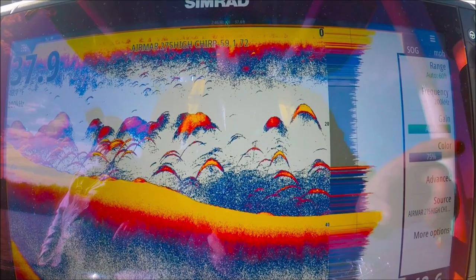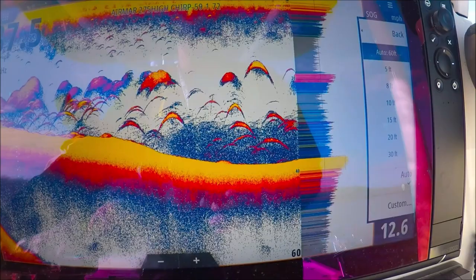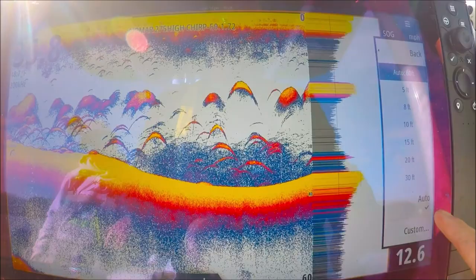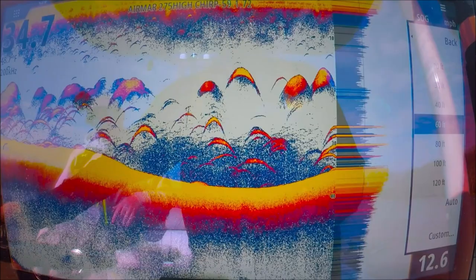Range, auto as well. If you're fishing in say 37 feet of water like we are right now and you're staying in 37 feet all day long, set it to a manual range. For instance, 40 feet, looks good.